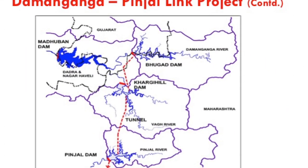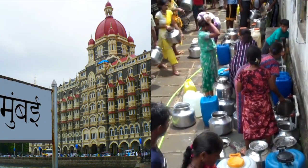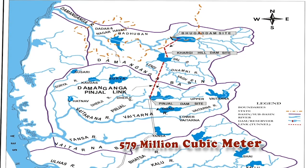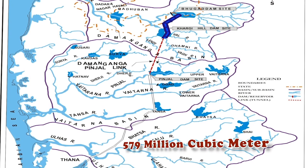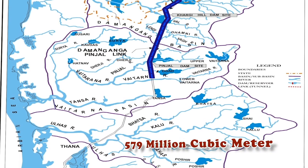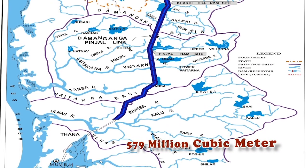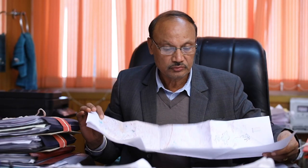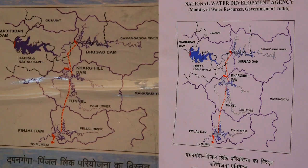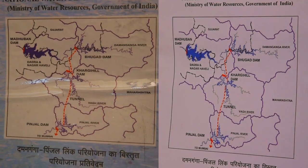The Daman Ganga-Pinjal link project aims to solve Mumbai's water scarcity. It envisages diversion of 579 million cubic meters of surplus water from the Daman Ganga basin to supplement domestic and industrial water supply needs of Mumbai. In 2014, NWDA completed the DPR and techno-economic clearance of the project was accorded by CWC.